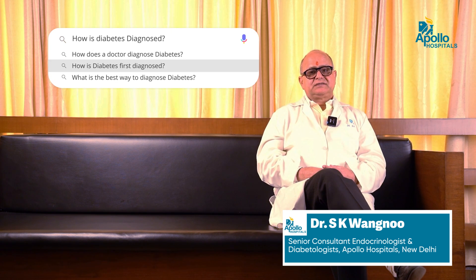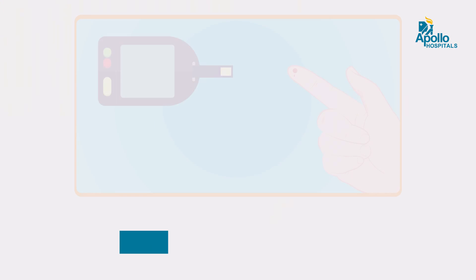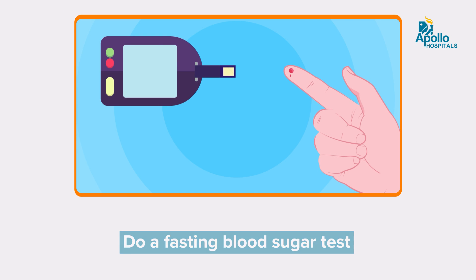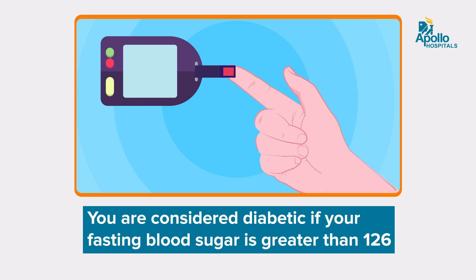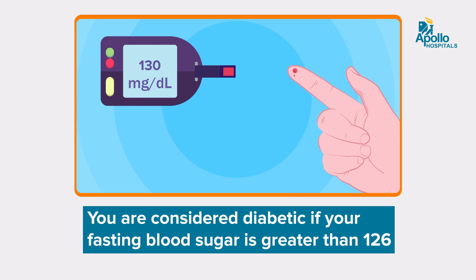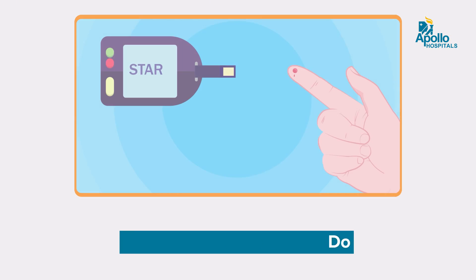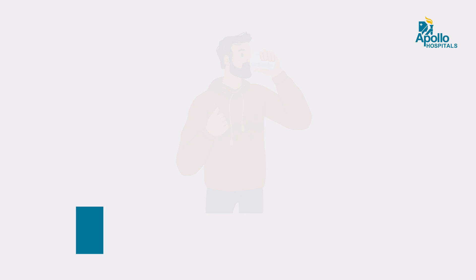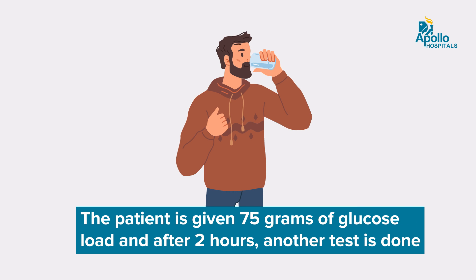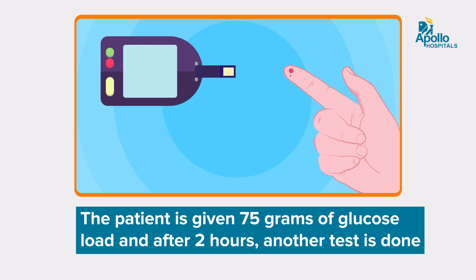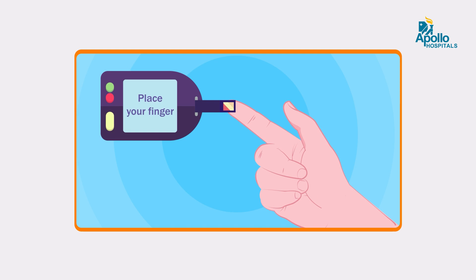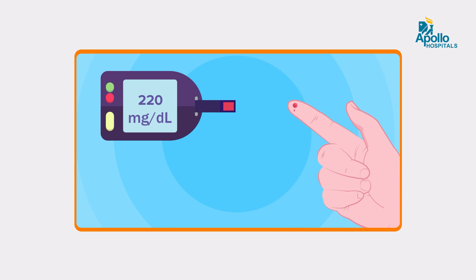How is diabetes diagnosed? Simple — get your fasting blood sugar done. If your fasting blood sugar is more than 126, then you are classified as a patient of diabetes. Or in certain cases, we do an oral glucose tolerance test, where you do a fasting blood sugar, then we give the patient a 75-gram glucose load and take another sample at two hours after the glucose load. If the two-hour post-glucose level is more than 200 milligrams per deciliter, then the patient is said to be having diabetes.